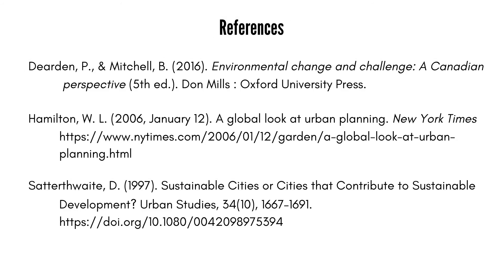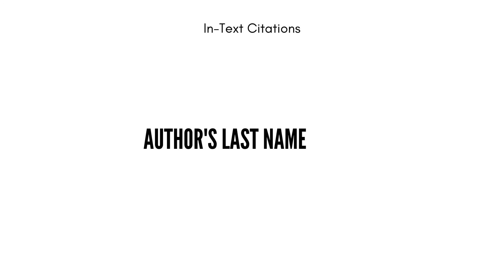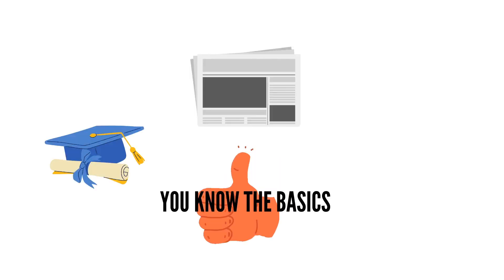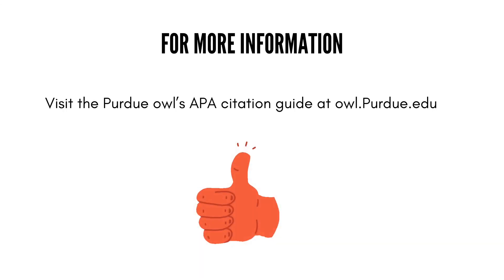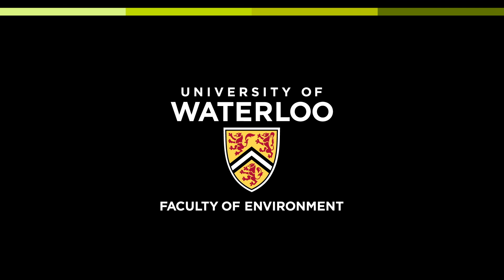This is what your reference list should look like. Don't forget to put your sources in alphabetical order and make sure you're using hanging lines. When doing in-text citations, you should follow the format of last name, comma, year of publication within parentheses at the end of the sentence. Now that you know these basics, you'll be able to cite any peer-reviewed article, newspaper article, or book. If you'd like to learn how to cite other forms of media, check out Purdue OWL's APA citation guide at owl.purdue.edu for more information.